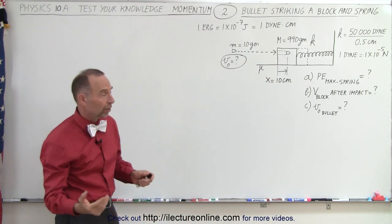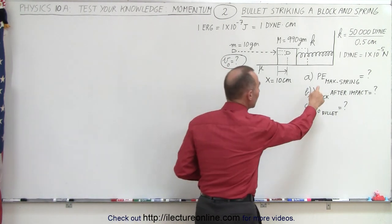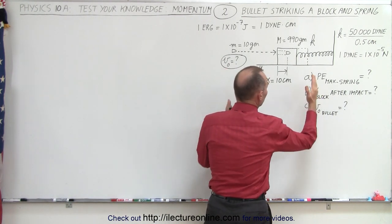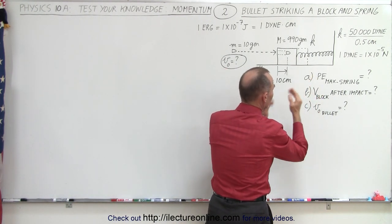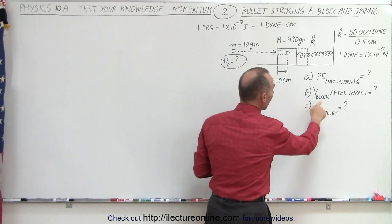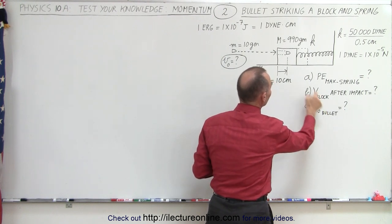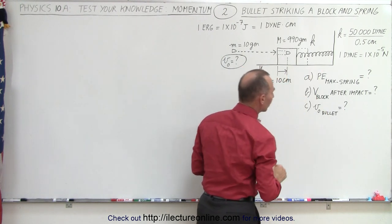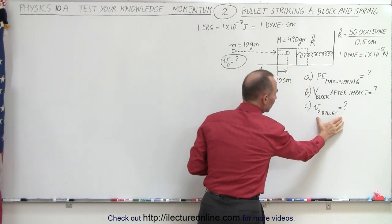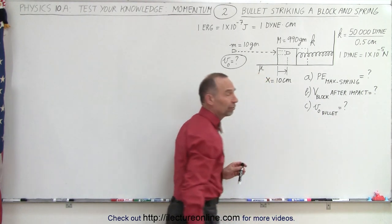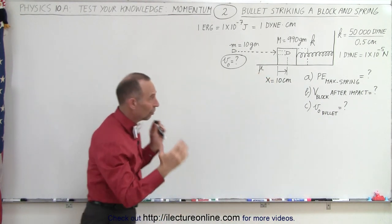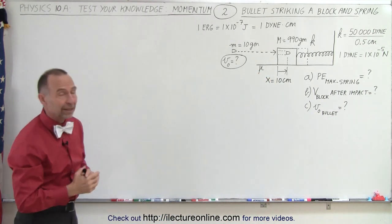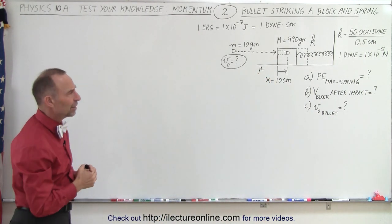The questions are: first, what is the maximum potential energy in the spring when it's fully compressed? Second, what is the velocity of the block right after the bullet hits the block? And third, what is the initial velocity of the bullet needed to make the block compress the spring 10 centimeters?